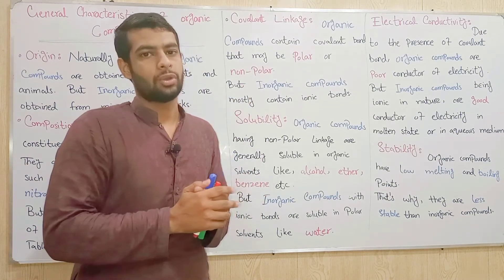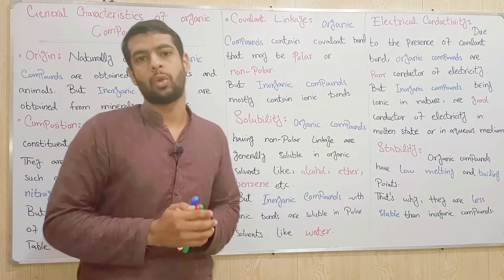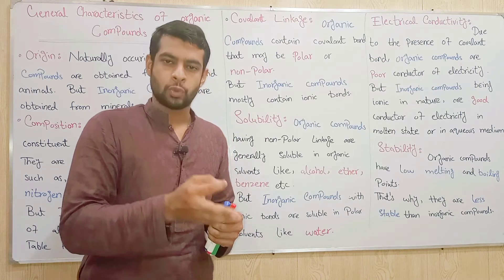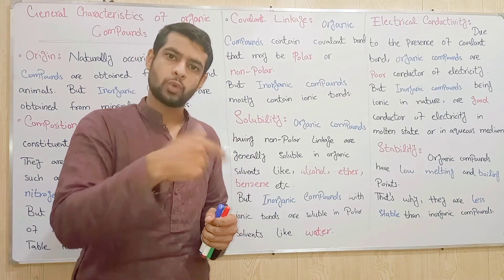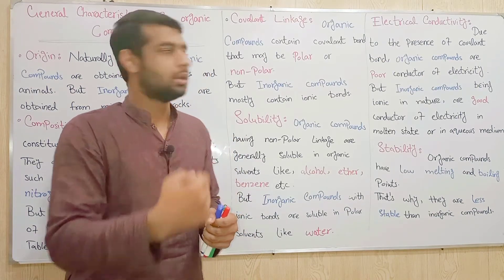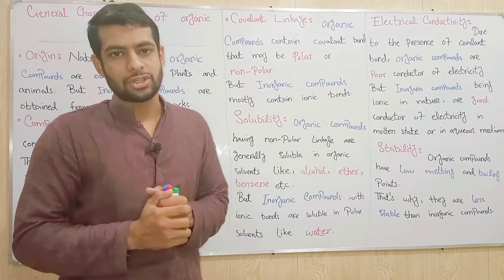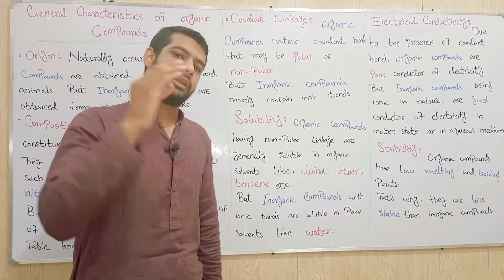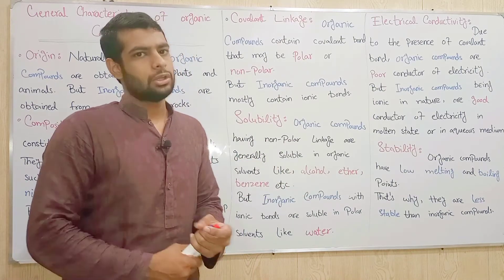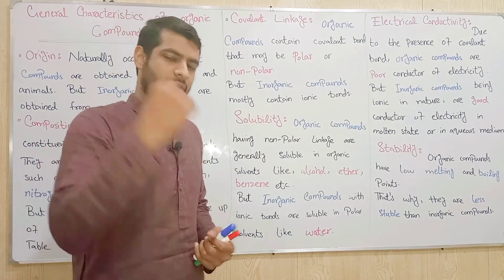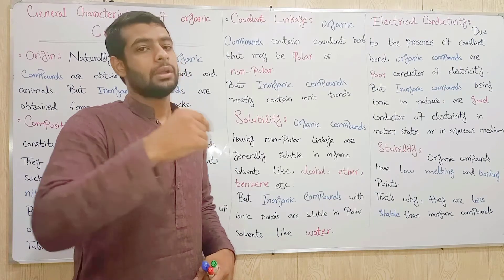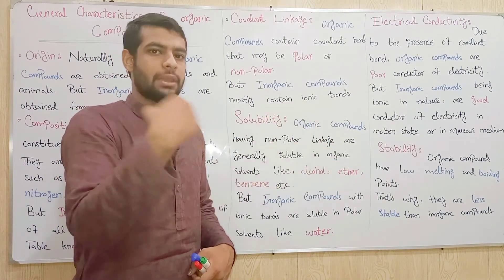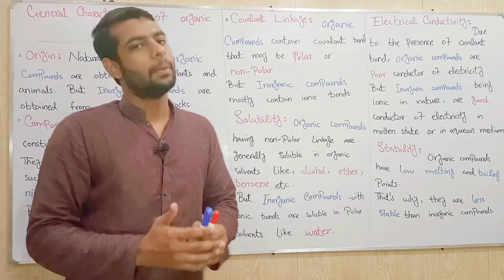Non-polar means two similar atoms make a covalent bond, which is called a non-polar covalent bond. Best examples are H2, Cl2, and F2 — two same type of atoms making a non-polar covalent bond. But inorganic compounds mostly contain ionic bonds. An ionic bond means complete transfer of an electron from one atom to another to make a bond.